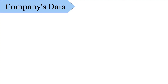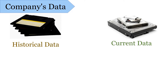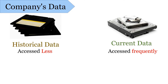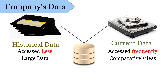Whenever we talk of data of any company, enterprise, organization, or bank, we can categorize data on the basis of time as historical data and current data. In day-to-day operations, historical data is rarely accessed while current data is accessed frequently. However, we have a huge amount of historical data collected over years, and current data is comparatively less. If we implement one operational system containing both, the added size of data would increase access time, hence the need for two different systems.